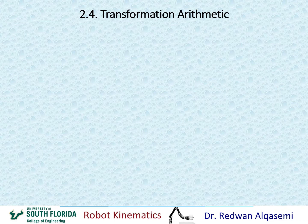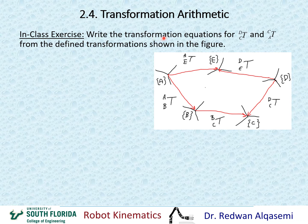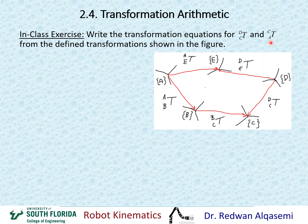Now let's take an in-class exercise. Write the transformation equations for T of C relative to D, and T of A relative to C. Use the defined transformations shown in the figure below. We have frames A, B, C, D, and E with various transformations defined. You need to find the transformation of C relative to D using one route, and the transformation of A relative to C going from C to A, using either the shorter or upper route. Please pause this video and solve before resuming to see the answer.